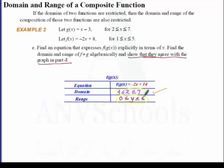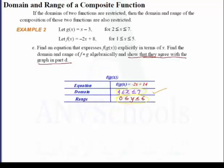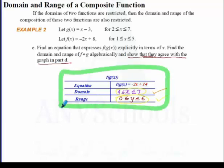For our range, our range here is from 0 to 6. Now let's take a look at our graph D. Our range, as you can see, is from 6 to 0, which confirms our range for f of g of x, which is from 0 to 6. So that confirms all our computations for the domains and ranges of f of g of x.